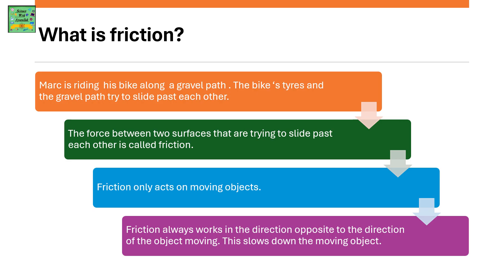Friction only acts on moving objects. Friction always works in the direction opposite to the direction of the moving object. So, in this example, the bike tires are the moving objects. The force of friction is acting opposite to the direction of the bike's tires, because of which the bike slows down.